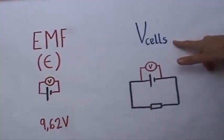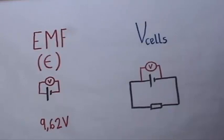Now I want to measure V cells, the terminal potential difference. Now, there isn't one terminal potential difference for this particular battery. It depends which circuit it is connected in. And the particular circuit I'm choosing is this one here. A very simple little circuit.